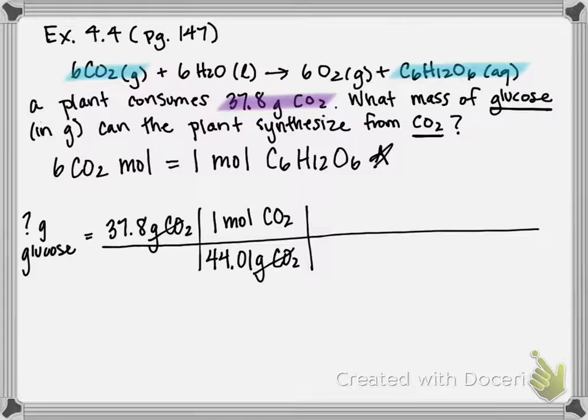Those coefficients, remember, can either stand for molecules or actual number of moles. So in order to cancel CO2, I'm going to put six mole CO2 on the bottom here. And I get that directly from the chemical reaction. On top, I put the substance moles that I'm trying to get to. In this case, the problem asks for glucose.